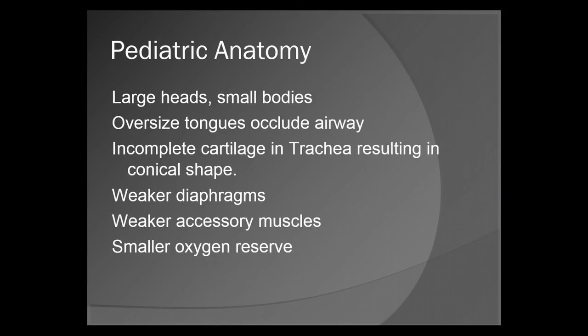Now we're going to go over the respiratory system. Pediatric anatomy differs greatly from adults. For starters, they have large heads and small bodies — they are very disproportionate. Their tongues are oversized and occlude the airway frequently. The cartilage in the trachea is incomplete, so it's the shape of a cone versus a round opening. Their diaphragms and accessory muscles are weaker, and because they have a smaller body, they have a smaller oxygen reserve.